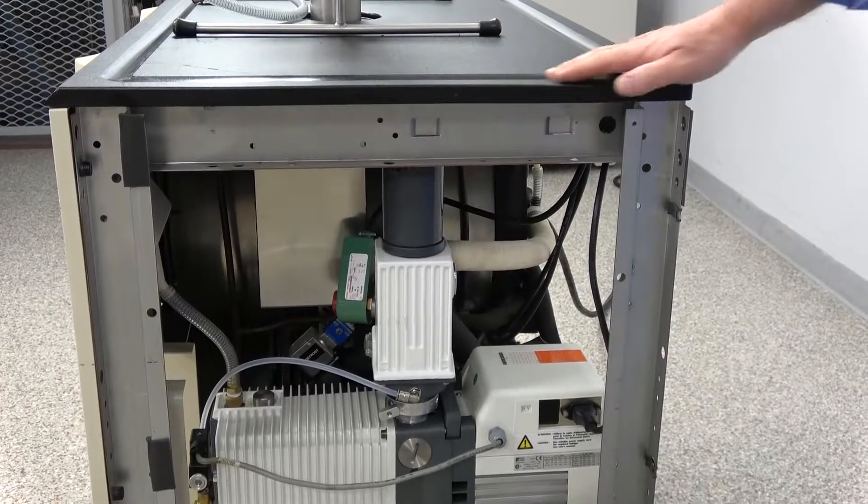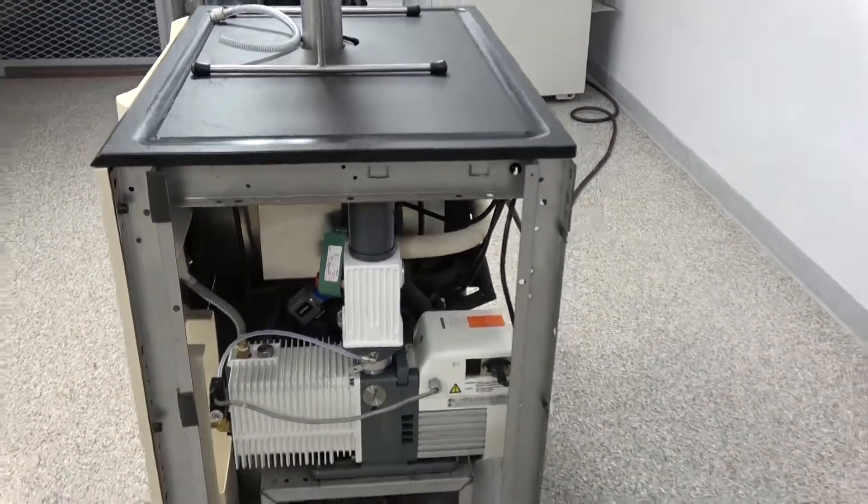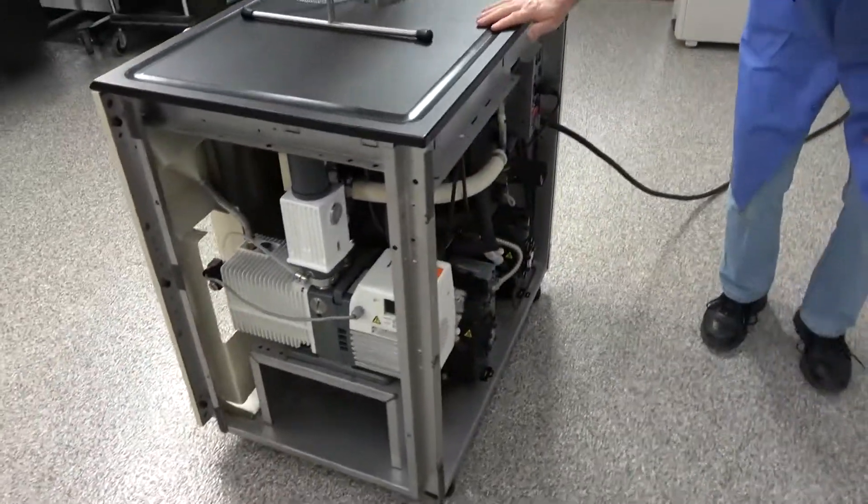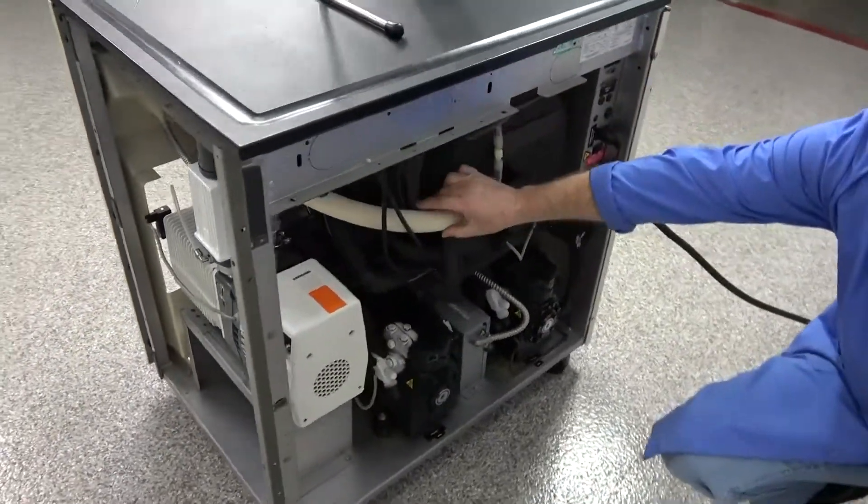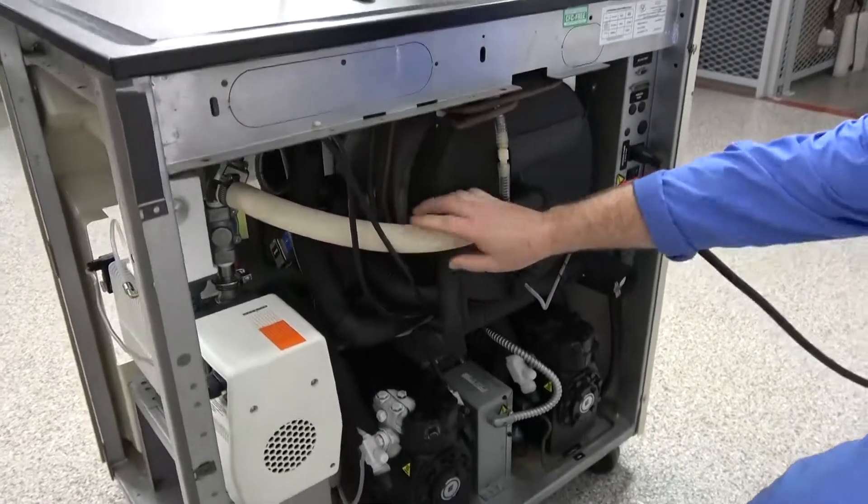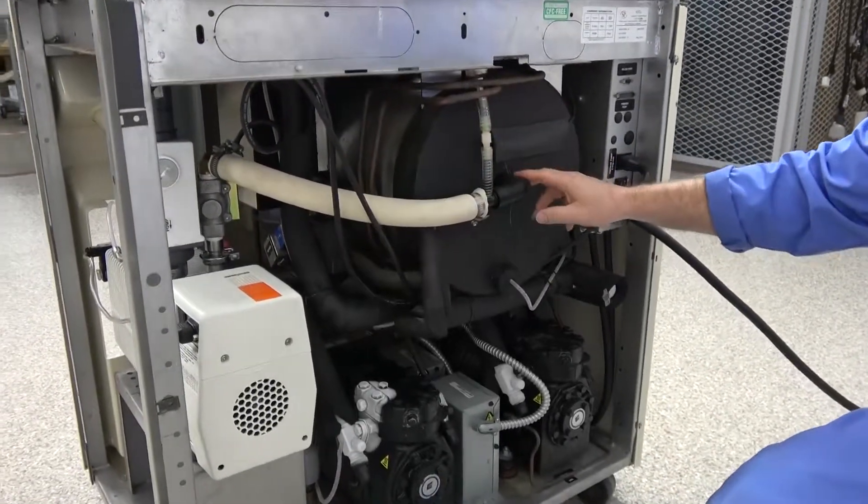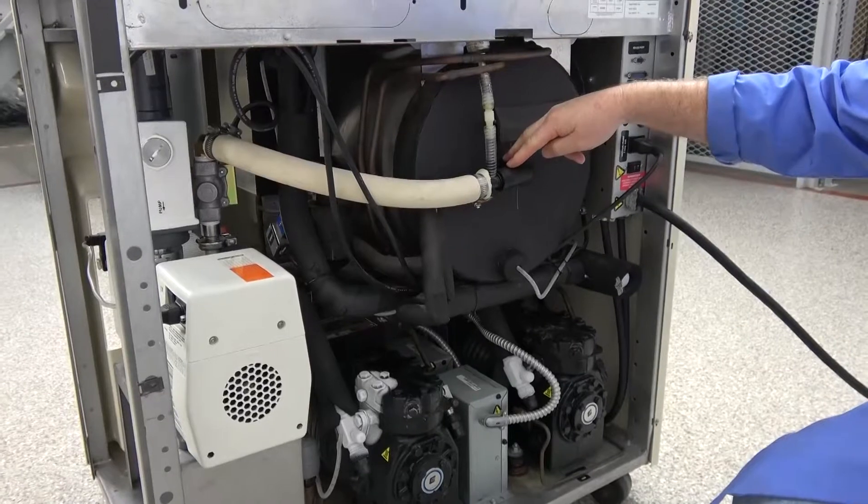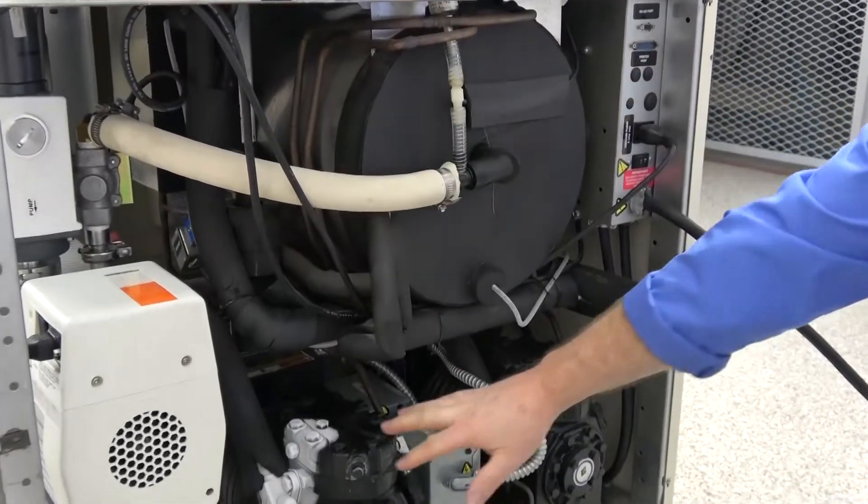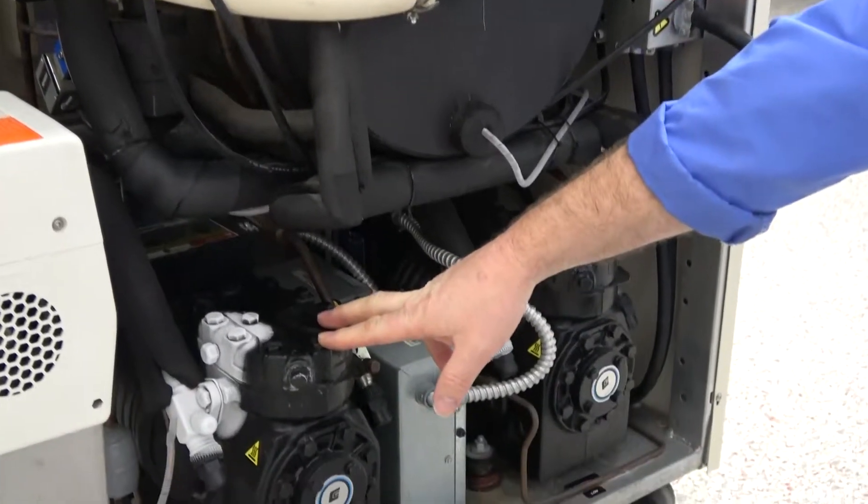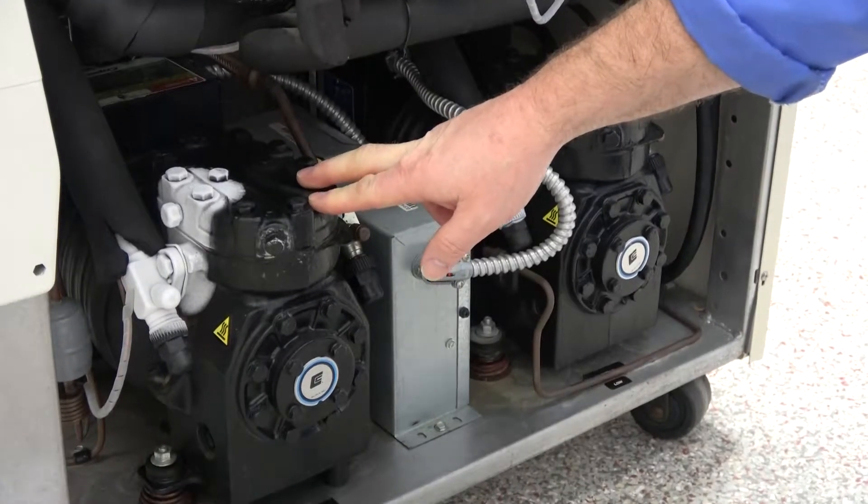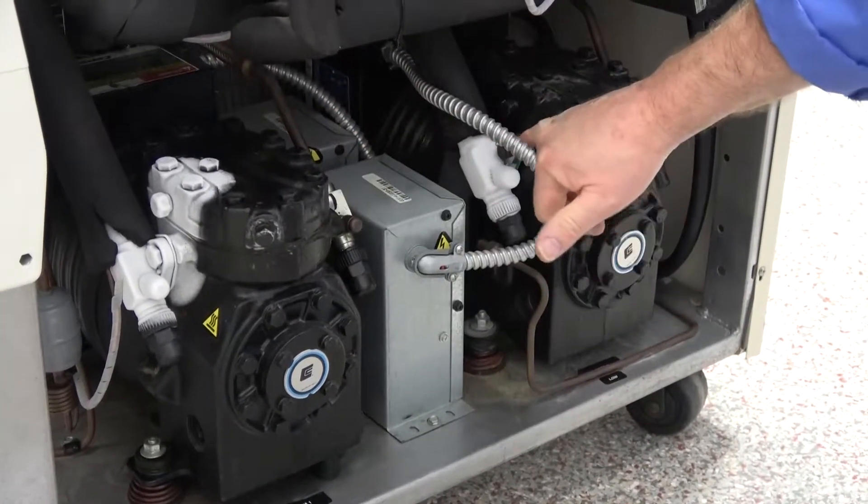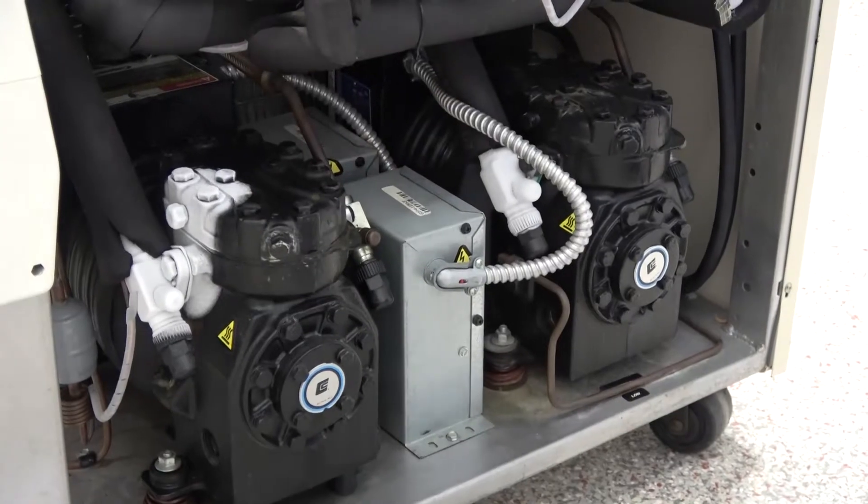And I want to also come around the back just to point out how nice this machine is. Again, we always change out all the vacuum hoses here. You can see we put new vacuum hoses on everywhere to get the best performance that we can. You can see the two compressors down here. They're pretty much maxed out. You can see the frost build up here. Very normal for these.